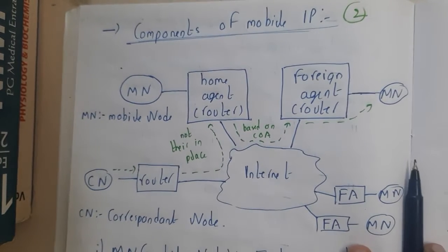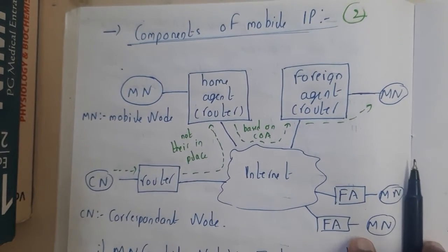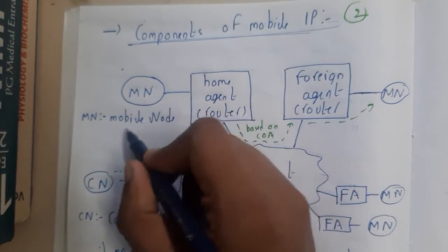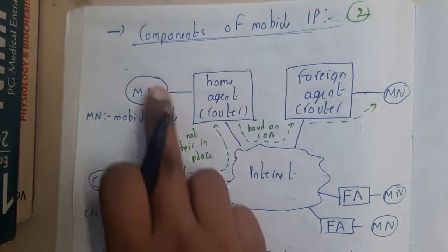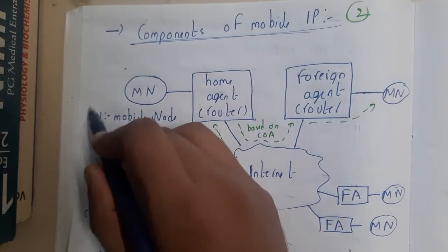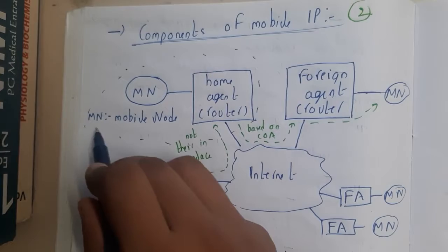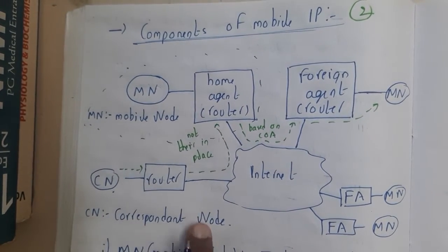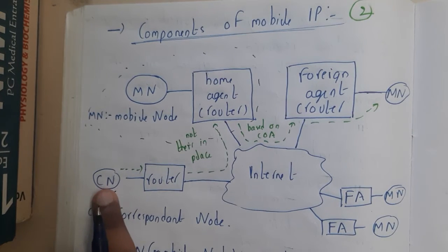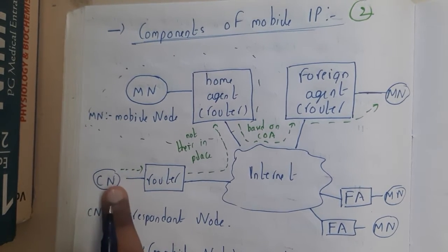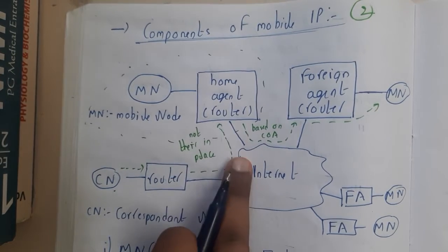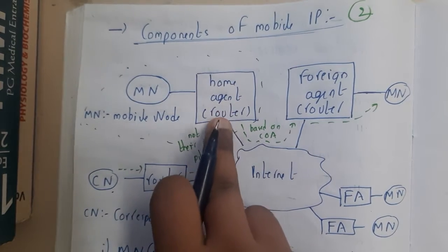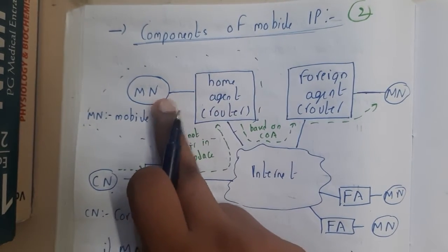Assume that you want to call your friend. Your friend is the mobile node (MN), and this is his hometown. Whenever you are calling — you are the correspondent node (CN) — your request will be sent to the router, which checks through the internet whether your friend is at home or not. If he is at home, it will send the data to him and you will get replies and can communicate.